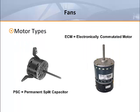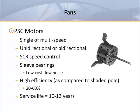Now let's look at motors. There are two types of motors used in terminal units: PSC and ECM. These motors have different operating limitations and features, so they should be selected and applied differently. Permanent split capacitor motors, or PSCs, for many years were the only motor choice. These motors can be single speed or multi-speed, unidirectional or bidirectional. They use a silicon controlled rectifier or SCR speed control to balance the fan. They typically have sleeve bearings for low cost and quiet operation. These motors are classified as high efficiency motors, but only when compared to shaded pole motors. The efficiency is 20–40% and is directly proportional to the speed, so as the speed is reduced, the efficiency is also reduced. When properly selected and installed, PSC motors can expect to have a service life of 10–12 years. Failure usually occurs due to sleeve bearing wear.